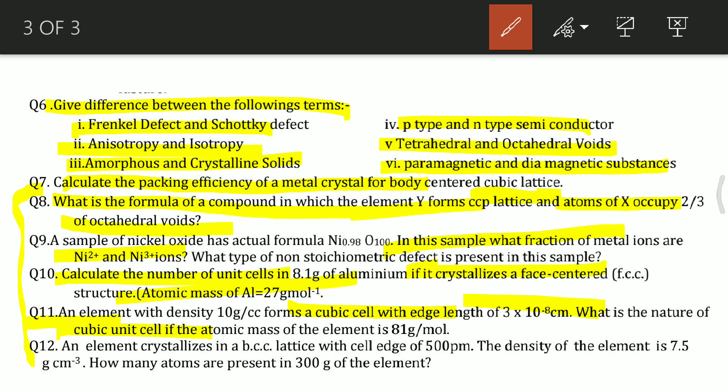Question 12, the last question: an element crystallizes in a BCC lattice with cell edge of 500 picometer. The density of the element is 7.5 g/cm³. How many atoms are present in 300 gram of the element? These kinds of questions are very important. All kinds of questions are already included.